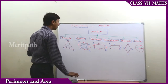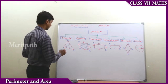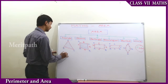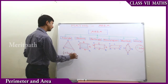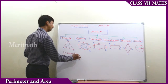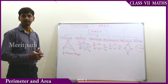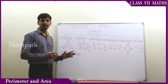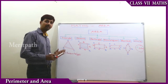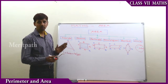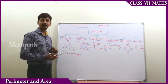The area of a triangle is half of the base multiplied by the height. It's nothing but half of the product of the base and height. Half of the product of the base and height of a triangle is called the area of a triangle.